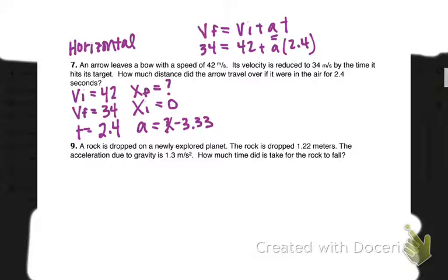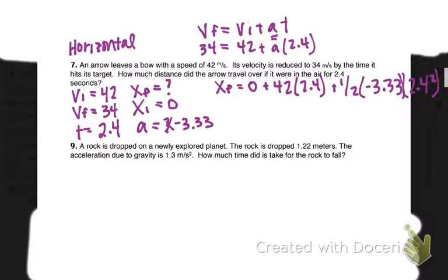Now I can choose what equation I want to use to solve for final displacement. I'll go ahead and just do the second one: xf equals zero plus 42 times t plus one-half times negative 3.33 times 2.4 squared.